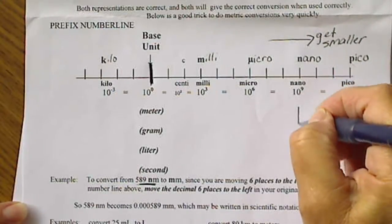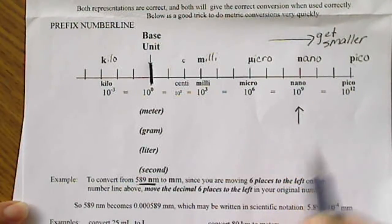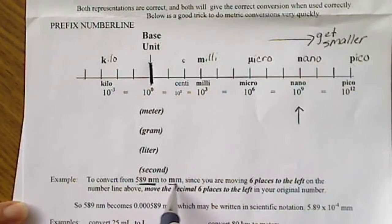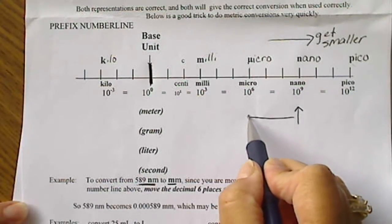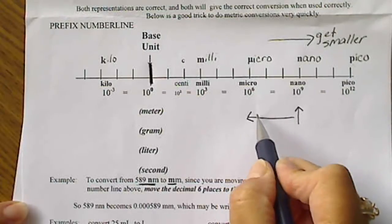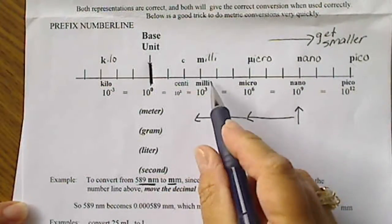Since we're starting with the Greek prefix nano, we're just going to find nano on the number line. And we're going to move until we get to the prefix milli. So we're going to move three places will get us to the prefix micro. And three more places will get us to the prefix milli.